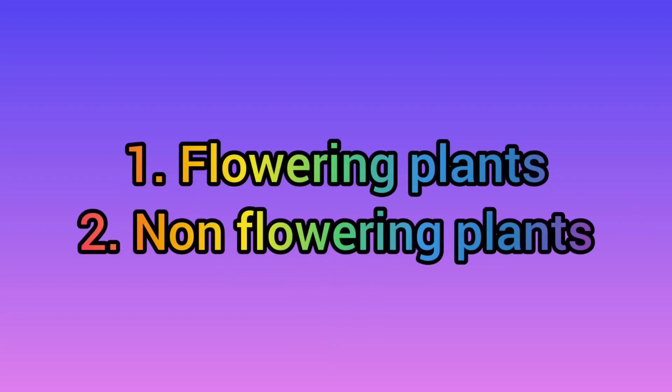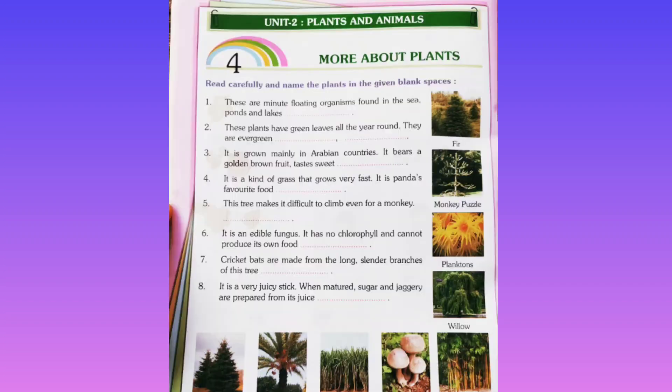Plants can be divided into two groups: flowering plants and non-flowering plants. Now let's go to unit two — Plants and Animals. The topic is more about plants.